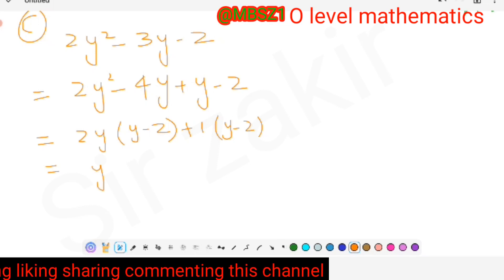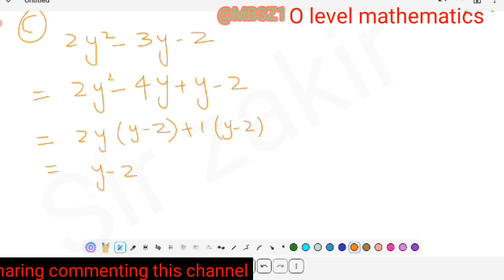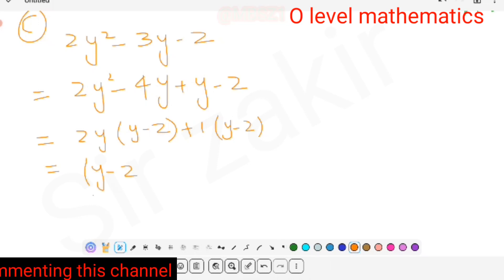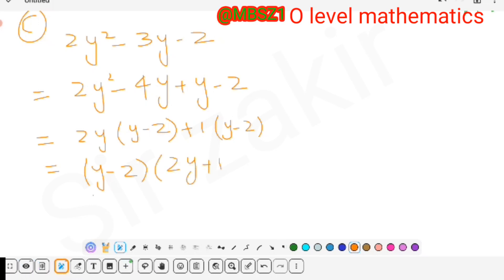So we see now that y - 2 is the common factor. Y - 2 will be written once, the other factor will be 2y + 1. And this ends this factorization with this answer: product of two linear factors.